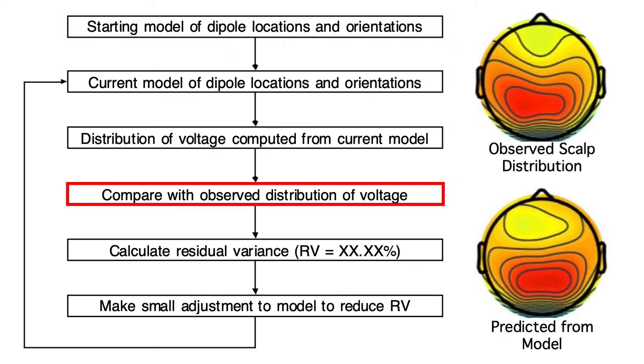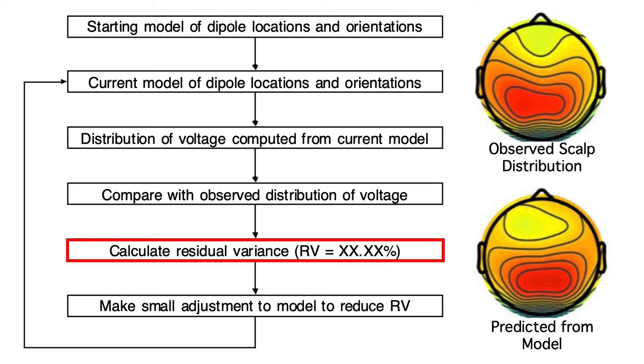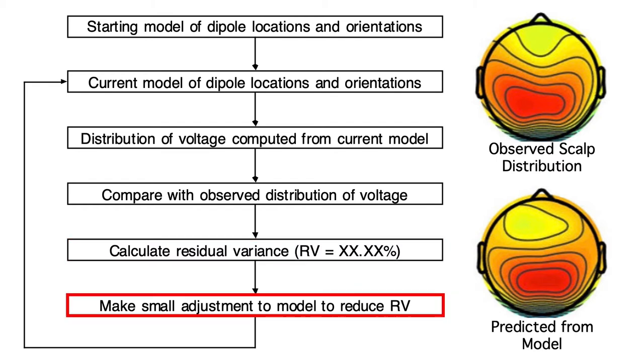You compare this with the observed scalp distribution and see how much error you have. This is done for every time point, and the aggregated error across time points is called the residual variance. The locations and orientations are then adjusted slightly to reduce the residual variance, generating a new model. This procedure is iterated until the residual variance reaches a low and stable level.